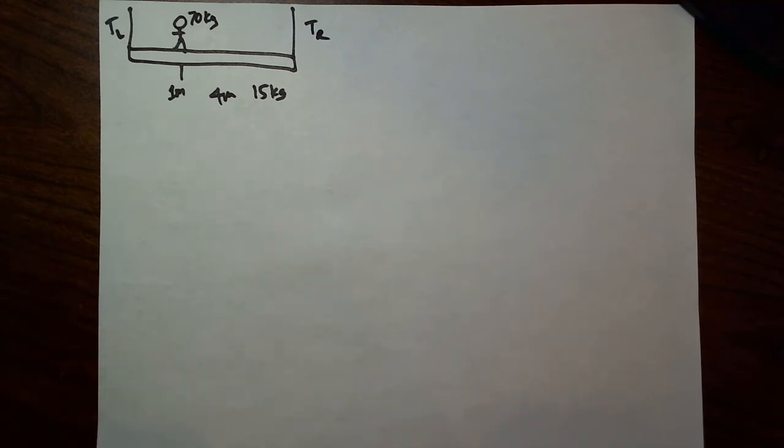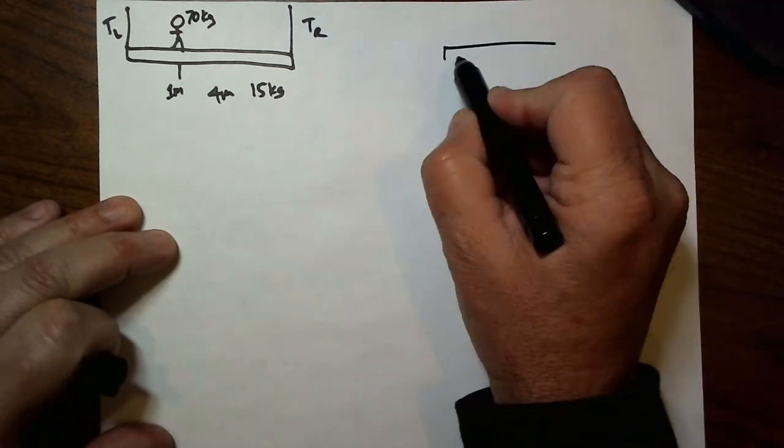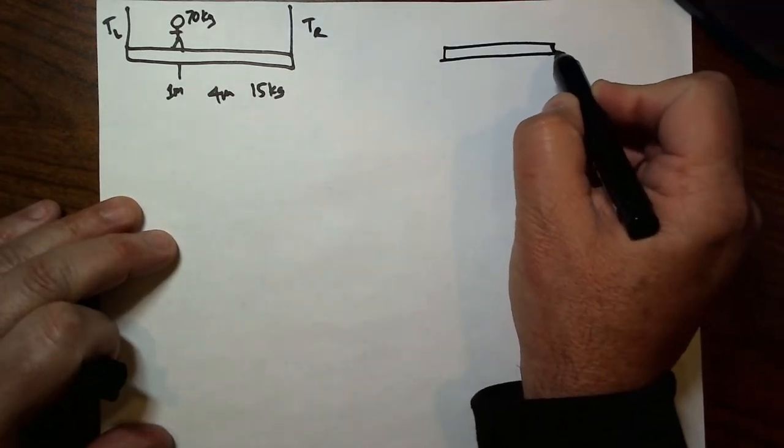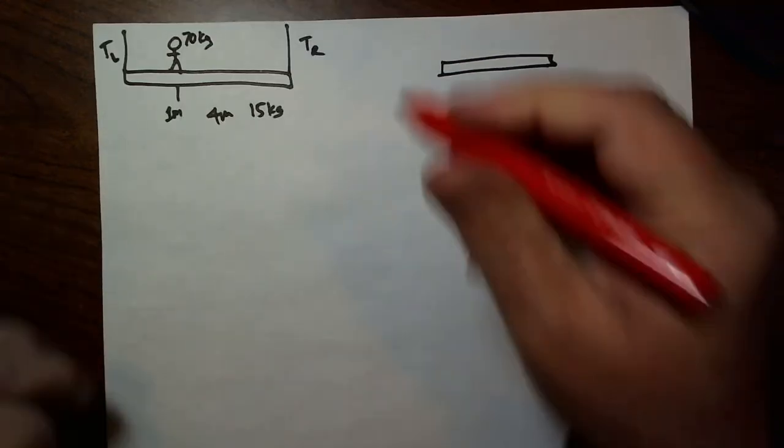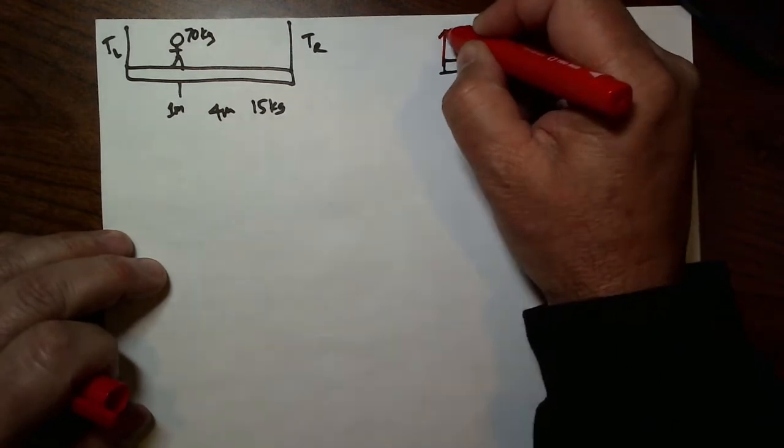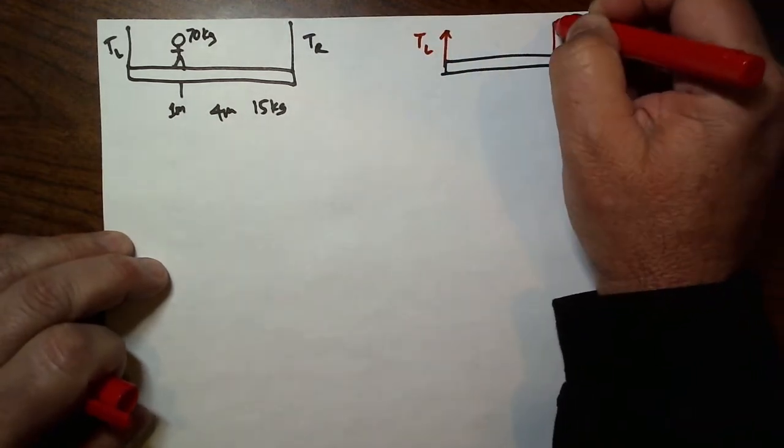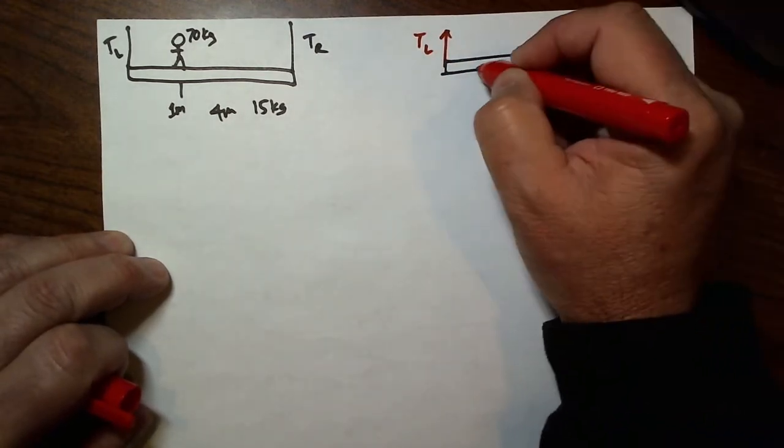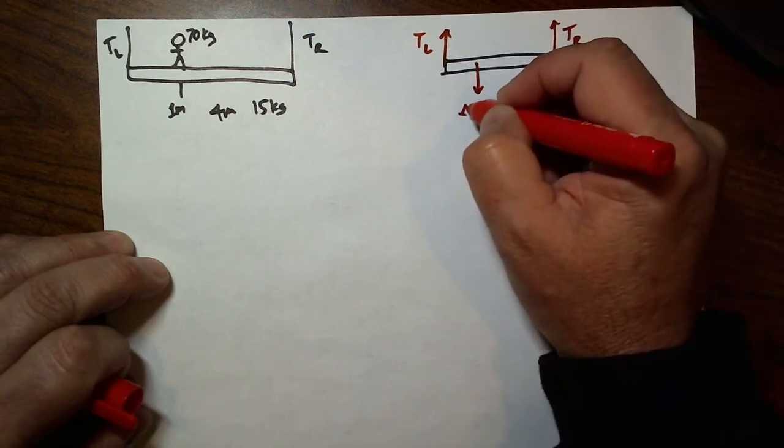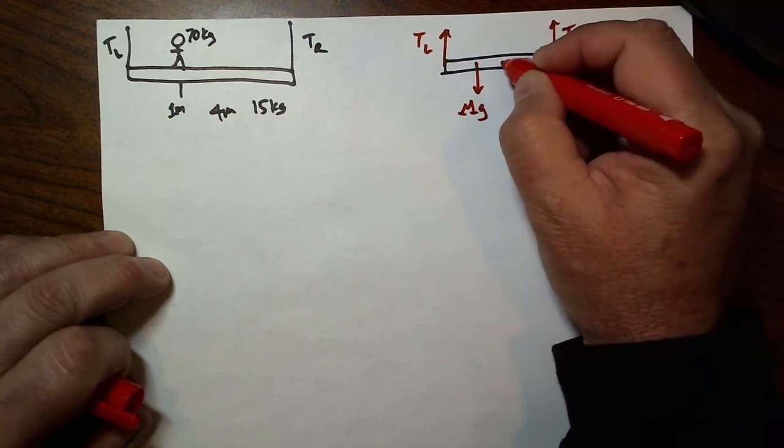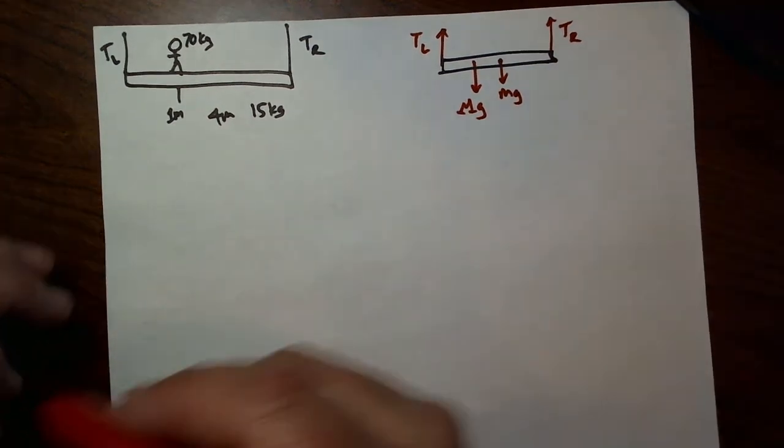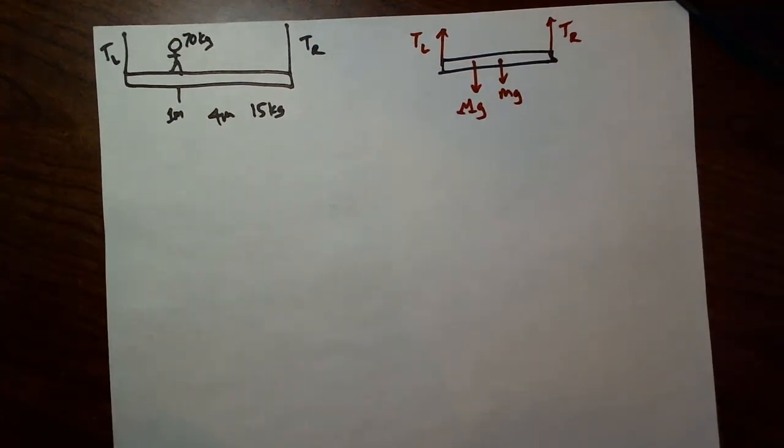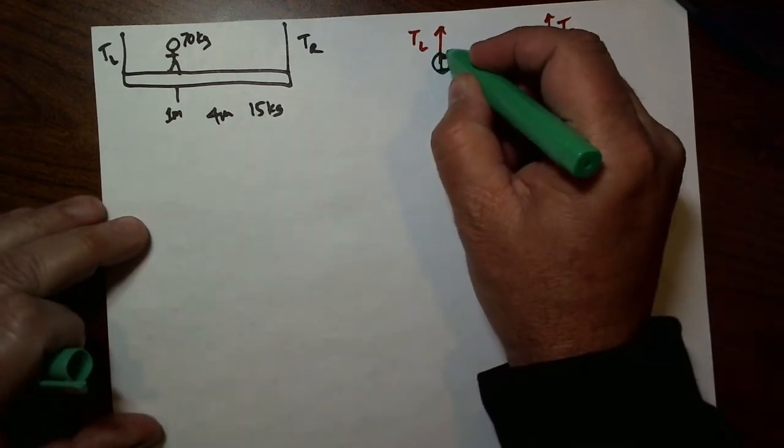Drawing an extended body diagram, we draw the plank. Now, this is an extended body diagram for the plank, so we only need forces that are on the plank. There is a lifting force TL, a lifting force TR. There is the weight of the dude, which I'm going to say is capital Mg, and there is the weight of the plank itself, which I'm going to call little mg. And we're going to choose our pivot point the same way we did before on the left-hand edge.